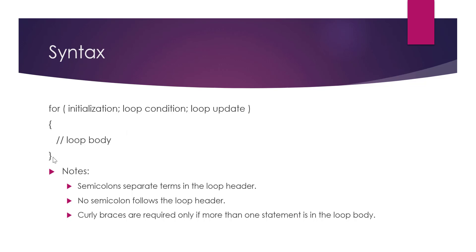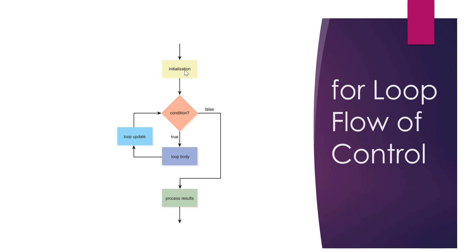The loop body is surrounded by curly braces unless you only have one statement — in that case the curly braces are optional. For the flow of control: we start with the initialization statement, then check the condition. If true, we go inside the loop body, then go to the loop update statement, and check the condition again. We keep performing this as long as the condition is true. Once the condition becomes false, we exit the for loop and can process our results.